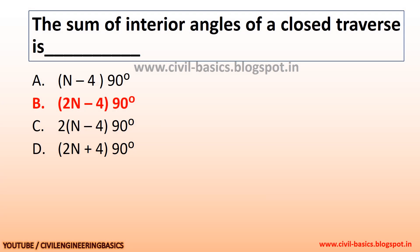The sum of interior angles of a closed traverse is (2n − 4) × 90 degrees, where n is the number of sides.